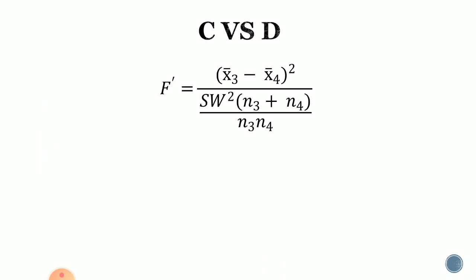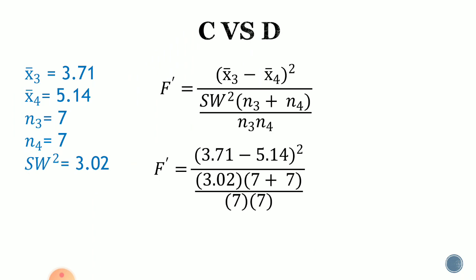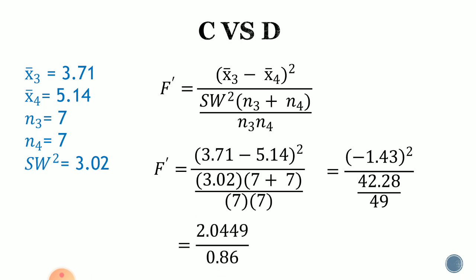The last comparison is C versus D. The mean of group 3 is 3.71, and the mean of group 4 is 5.14. N sub 3 and N sub 4 are both 7, and SW squared equals 3.02. Plugging these values into the formula: the quantity 3.71 minus 5.14, squared, all over 3.02 times the quantity 7 plus 7, all over 7 times 7. That gives negative 1.43 squared over 42.28 over 49, equal to 2.0449 divided by 0.86, which equals 2.38.